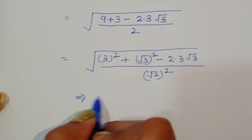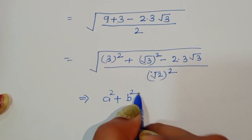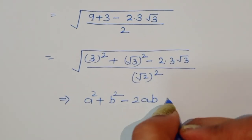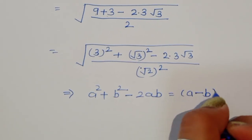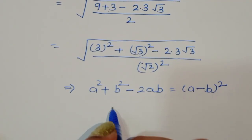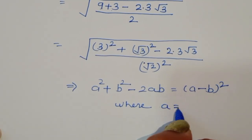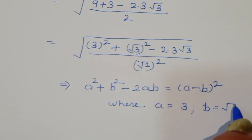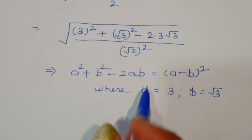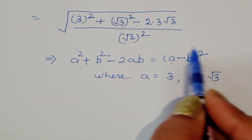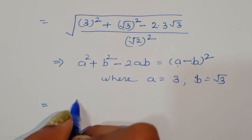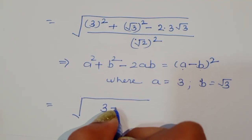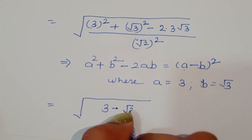We are using the formula: a squared plus b squared minus 2ab equals (a minus b) whole square, where a equals 3 and b equals square root of 3. So we are converting the numerator into the form (a minus b) whole squared, giving us (3 minus square root of 3) squared divided by 2.